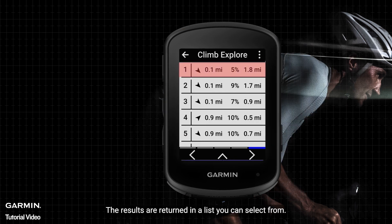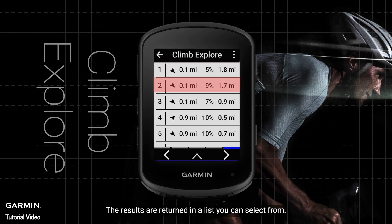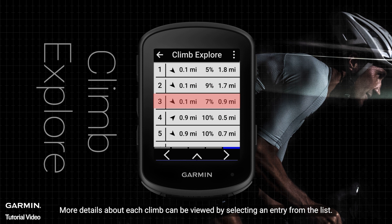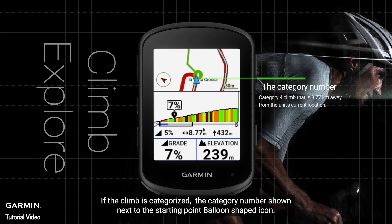The results are returned in a list you can select from. More details about each climb can be viewed by selecting an entry from the list. If the climb is categorized, the category number shows next to the starting point balloon-shaped icon.